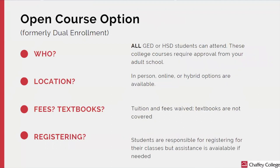Open course option, formerly known as dual enrollment, is available to all GED or high school diploma students. These college courses require approval from your adult school. These courses have the option of being in-person, online, or hybrid. Tuition and fees are waived; however, textbooks are not covered by our department and are the responsibility of the student. To register, students are responsible to self-register for their classes, but assistance is available if needed.